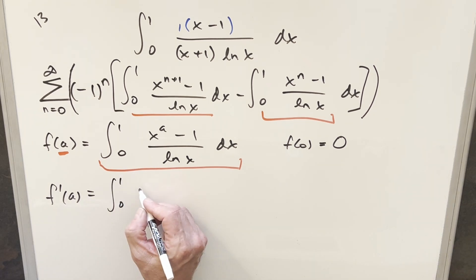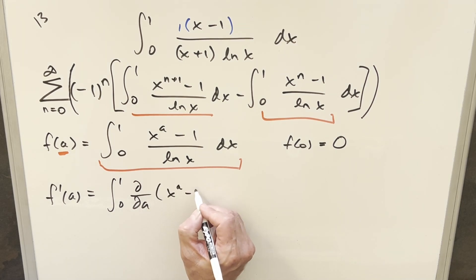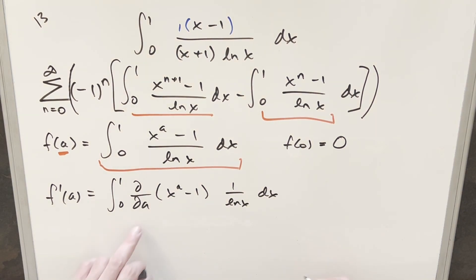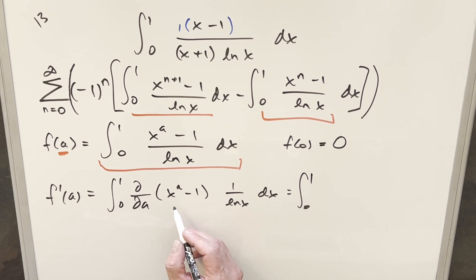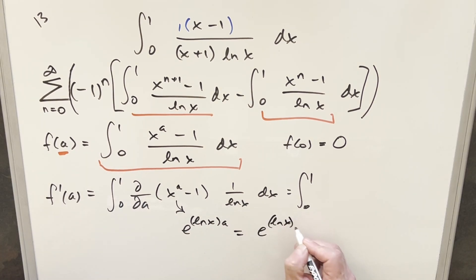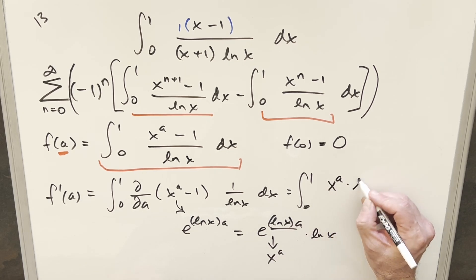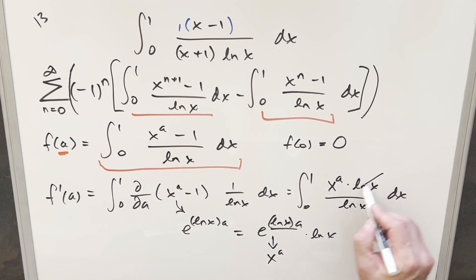We differentiate inside the integral with respect to a. The 1 over ln(x) is a constant with respect to a, so we bring it up. The derivative of 1 is 0. For the derivative of x to the a — we can write this as e to the (ln(x) times a). Differentiating gives back e to the (ln(x) times a), and by the chain rule, an ln(x) pops out. We write this back as x to the a times ln(x), and then the ln(x)'s cancel.